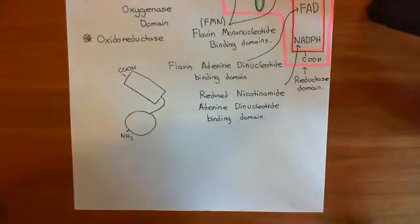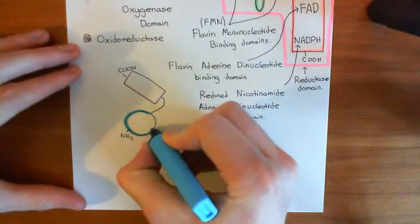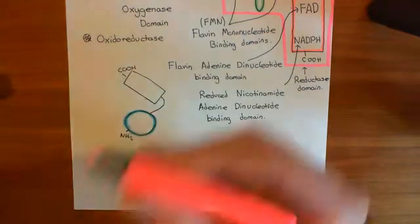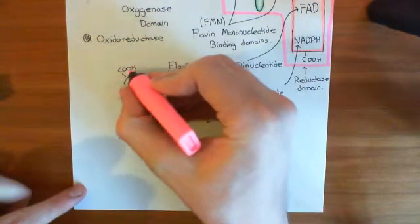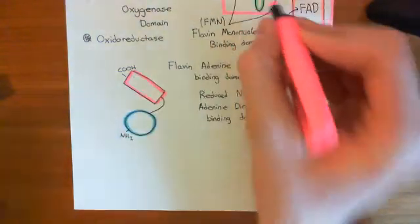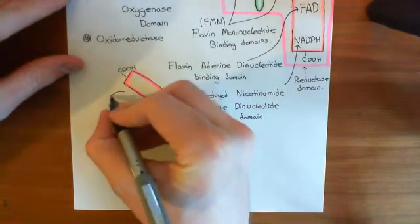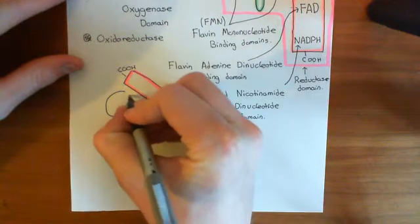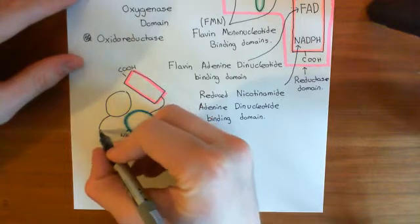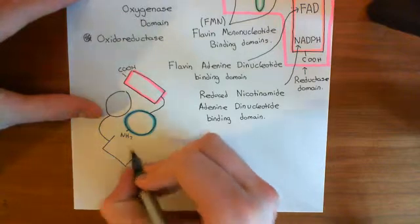The blue portion over here is the oxygenase domain of one of these nitric oxide synthase proteins, whereas this rectangle, which I'll colour in pink — the same as how I denoted the reductase domain — represents the reductase domain. What you do is dimerise this with another one of these proteins, so here's the oxygenase domain here, and then you have the reductase here.